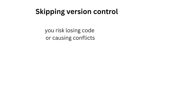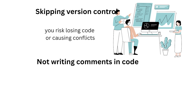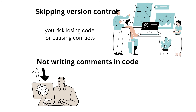Mistake 11: Skipping version control. Without proper versioning, you risk losing code or causing conflicts. Learn Git, or whatever tool your team uses, and use it consistently. Mistake 12: Not writing comments in code. Future you and your teammates will thank you — comment your logic clearly and briefly.